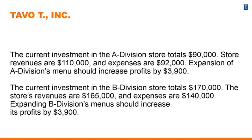Similar information is available for the B Division. The current investment in the B Division totals $170,000. The store's revenues on an annual basis are approximately $165,000, and expenses are $140,000. Expanding B Division's menu should increase its profits by approximately the same amount — $3,900.